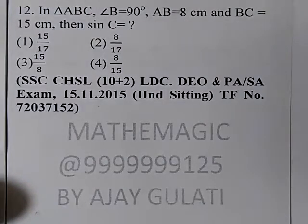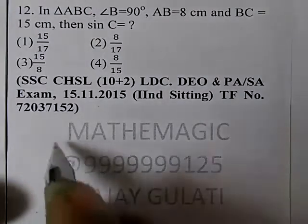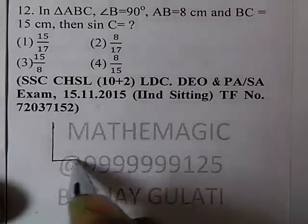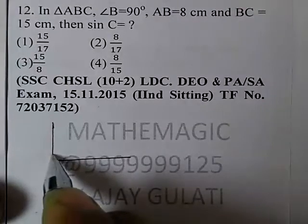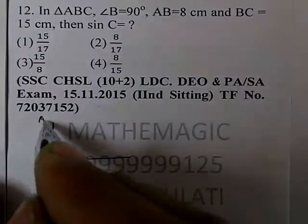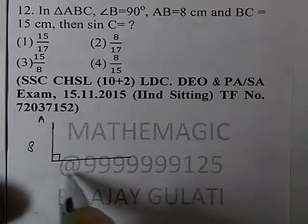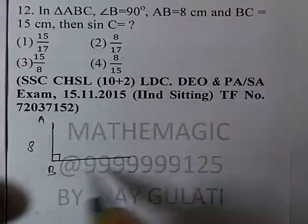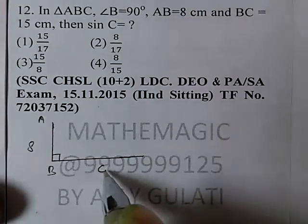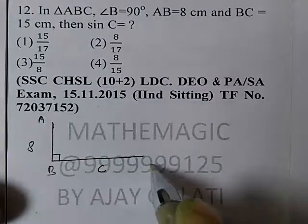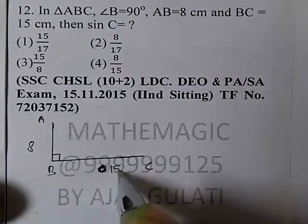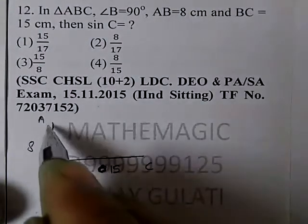In triangle ABC, angle B is equal to 90 degrees, AB is equal to 8 cm, and BC is equal to 15 cm. Find sin C.